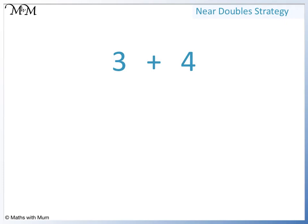Here we have 3 plus 4. 3 and 4 are very close. 4 is only 1 more than 3. So to find the answer we can simply double 3 and add 1.